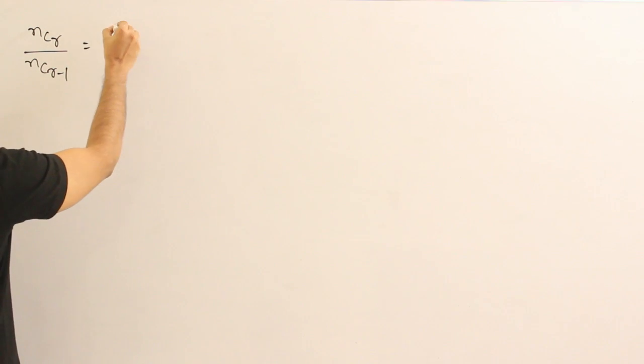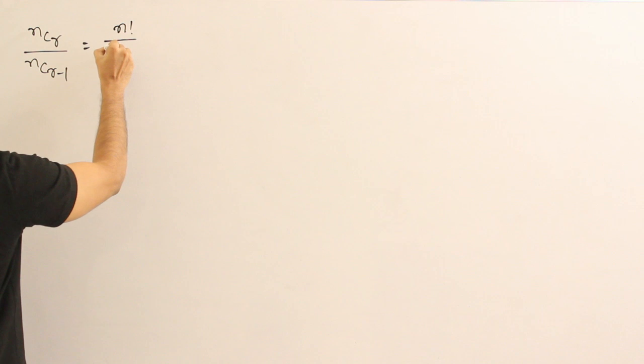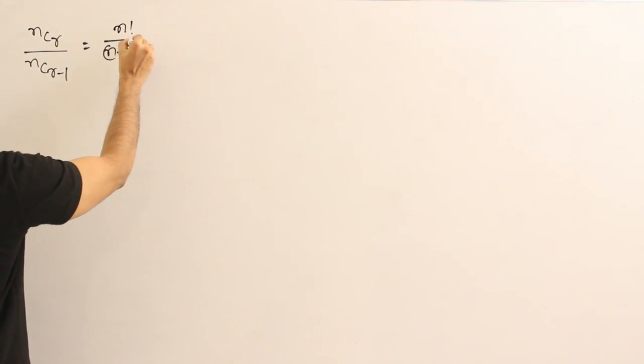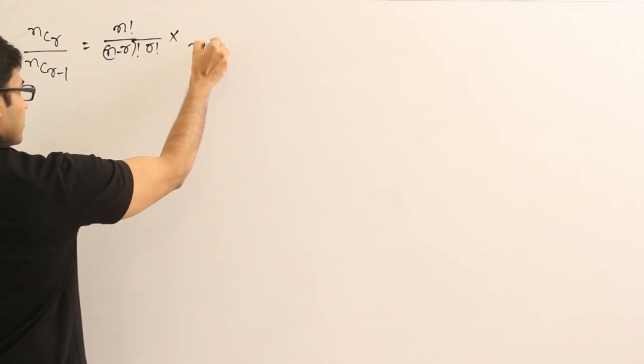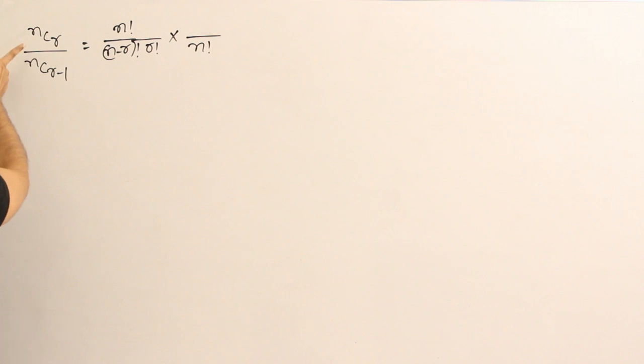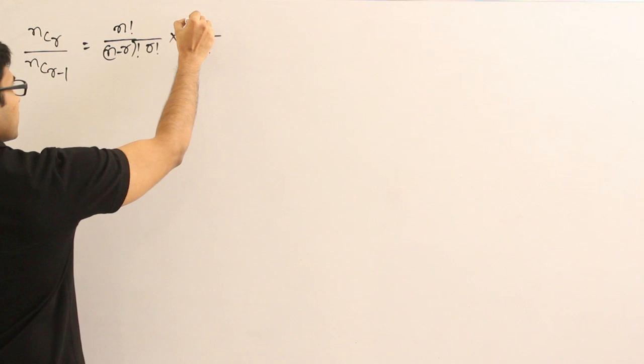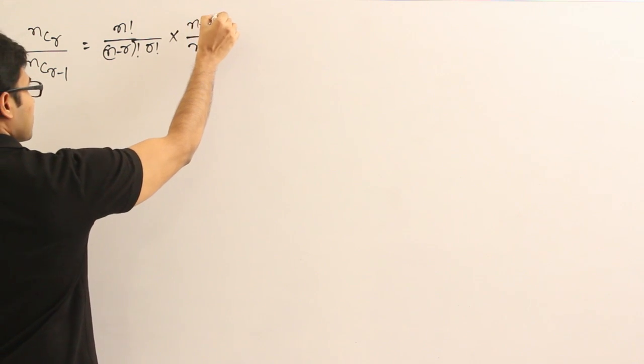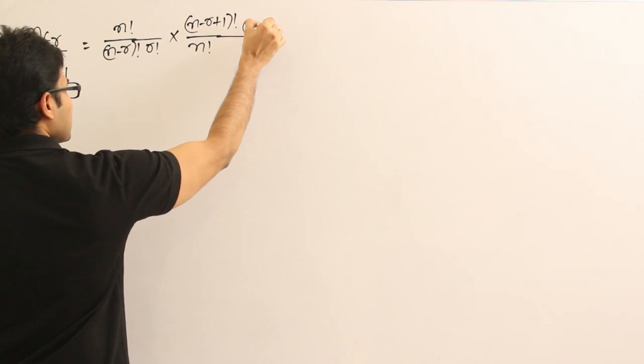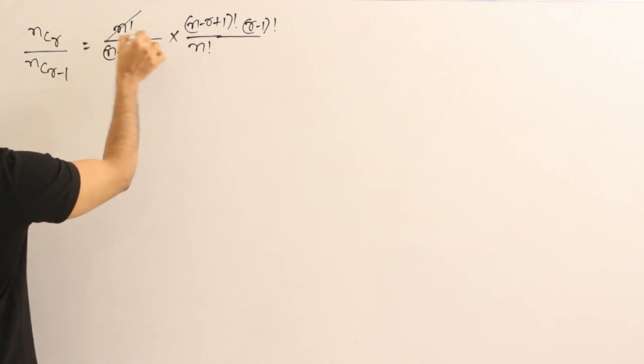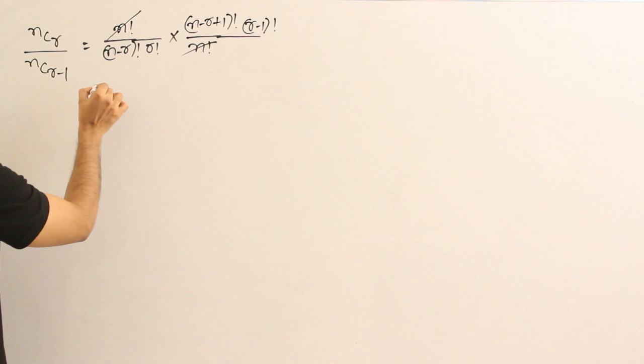Now, NCR is nothing but N factorial divided by N minus R factorial into R factorial, into 1 by NCR minus 1. So, I am just writing it N factorial. You are understanding it, right? Since it is denominator, I am just reversing the terms. So, into N minus R plus 1 factorial into R minus 1 factorial. Now, this term and this term will get cancelled out. Now, observe this.